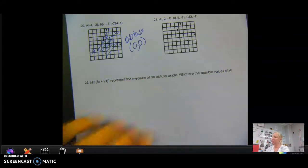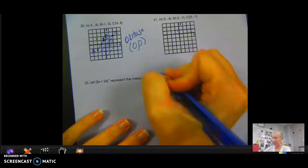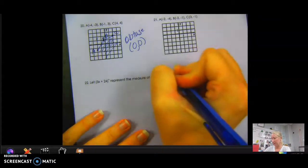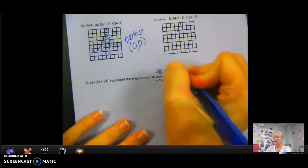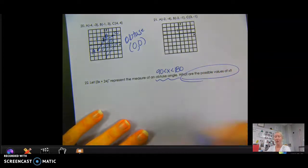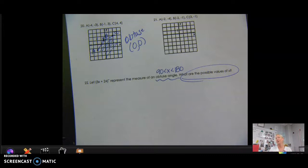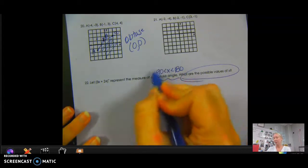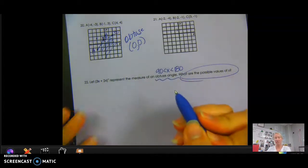Let 3x plus 4 represent the measure of an obtuse angle. Remember, an obtuse angle is an angle in between 90 degrees and 180. What are all the possible values of x? So we don't know if that obtuse angle is 91 degrees. We don't know if it's 179 degrees. We don't know if it's 120 degrees. We have to be able to figure out any value of x between these two numbers.